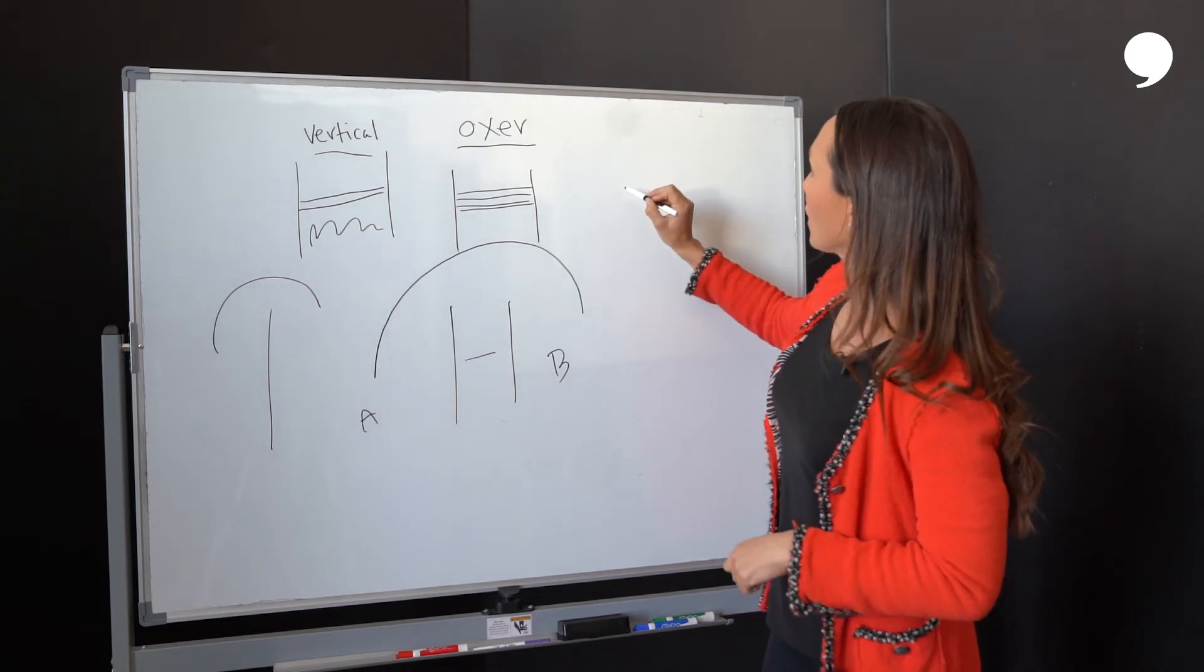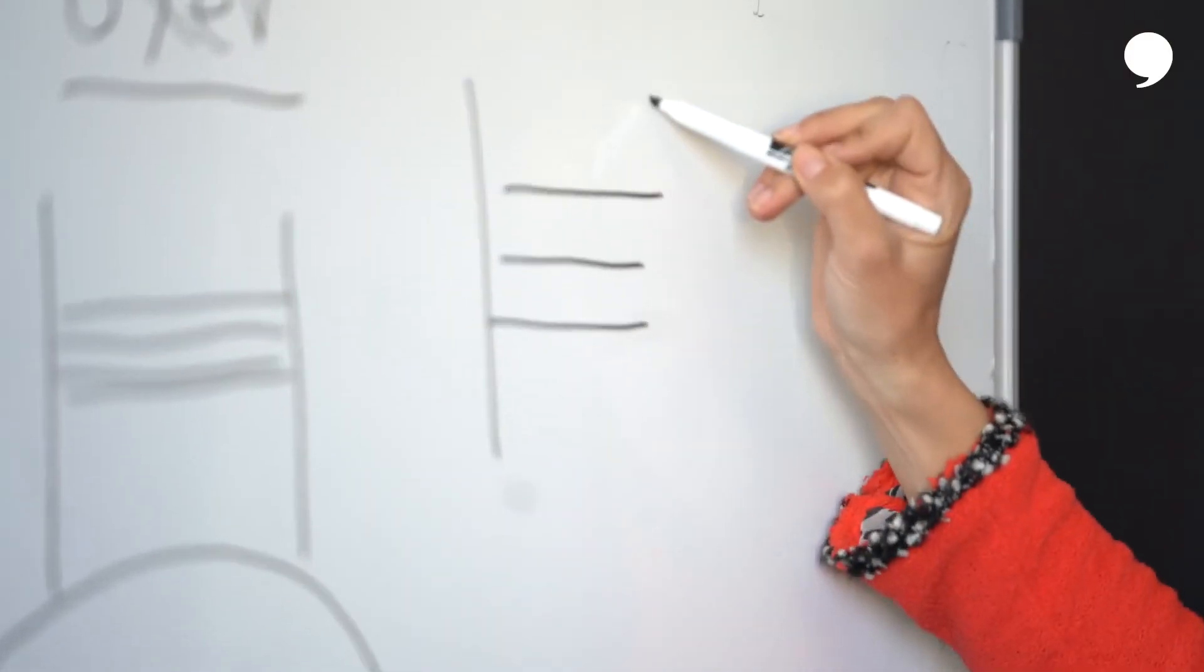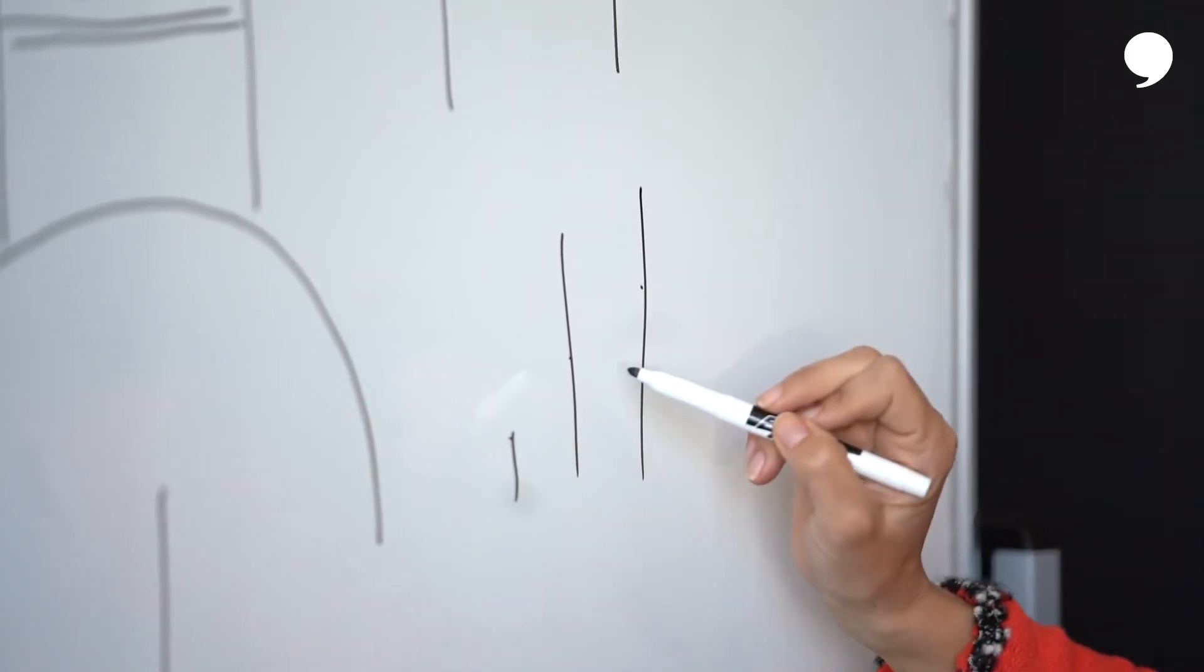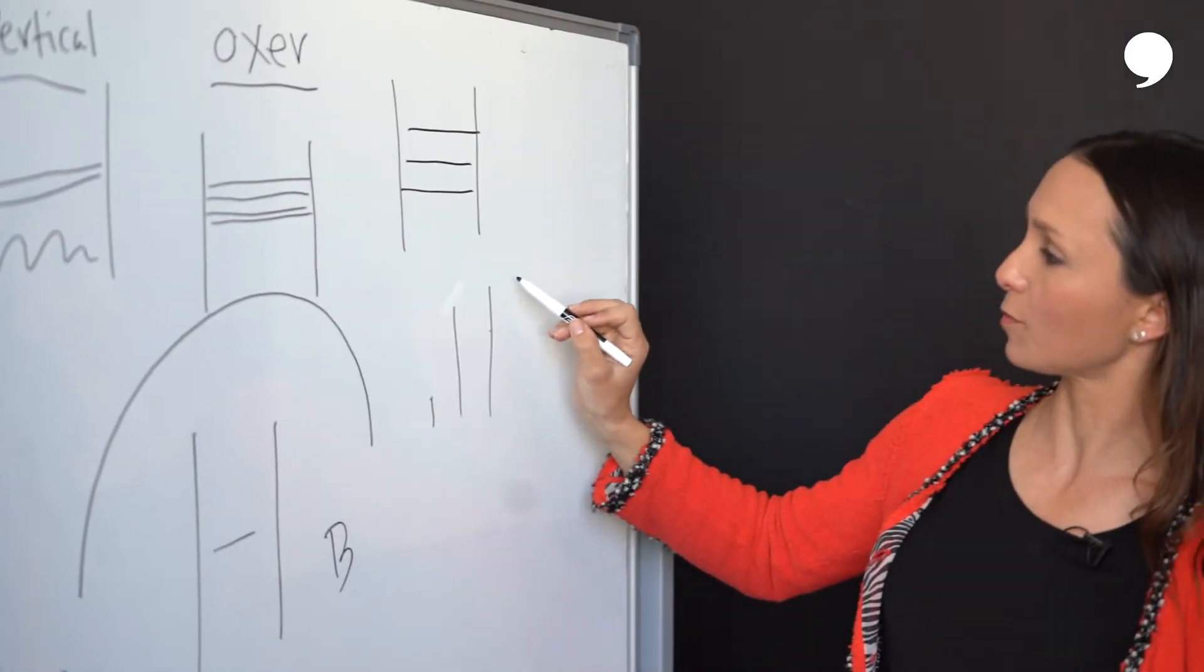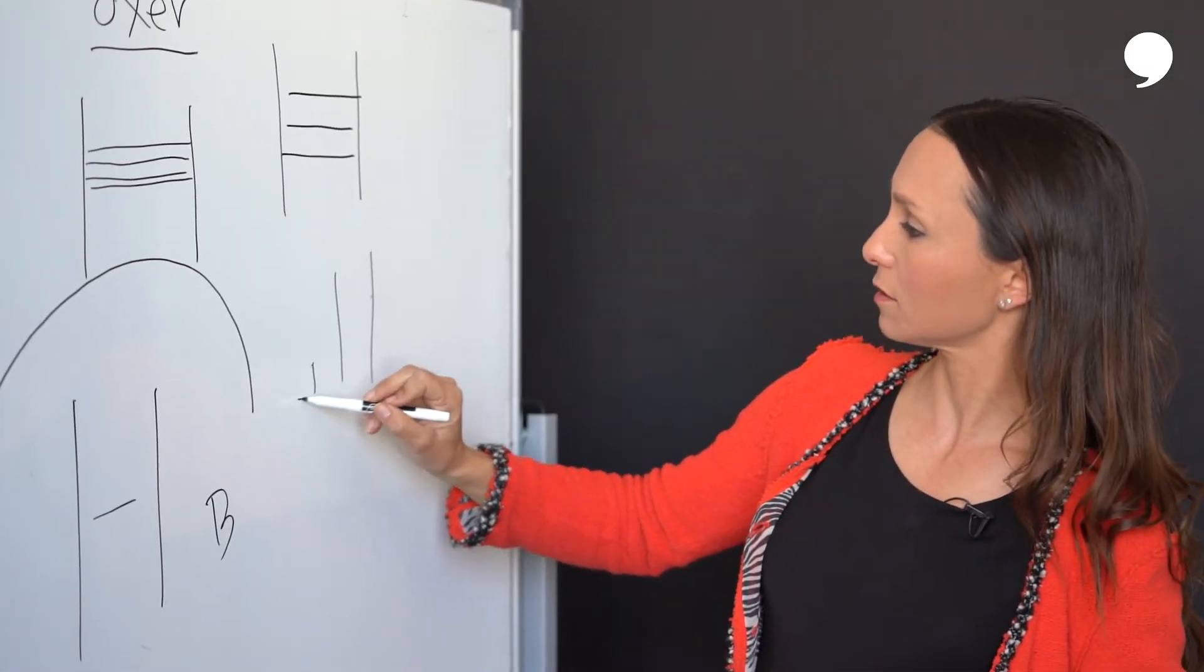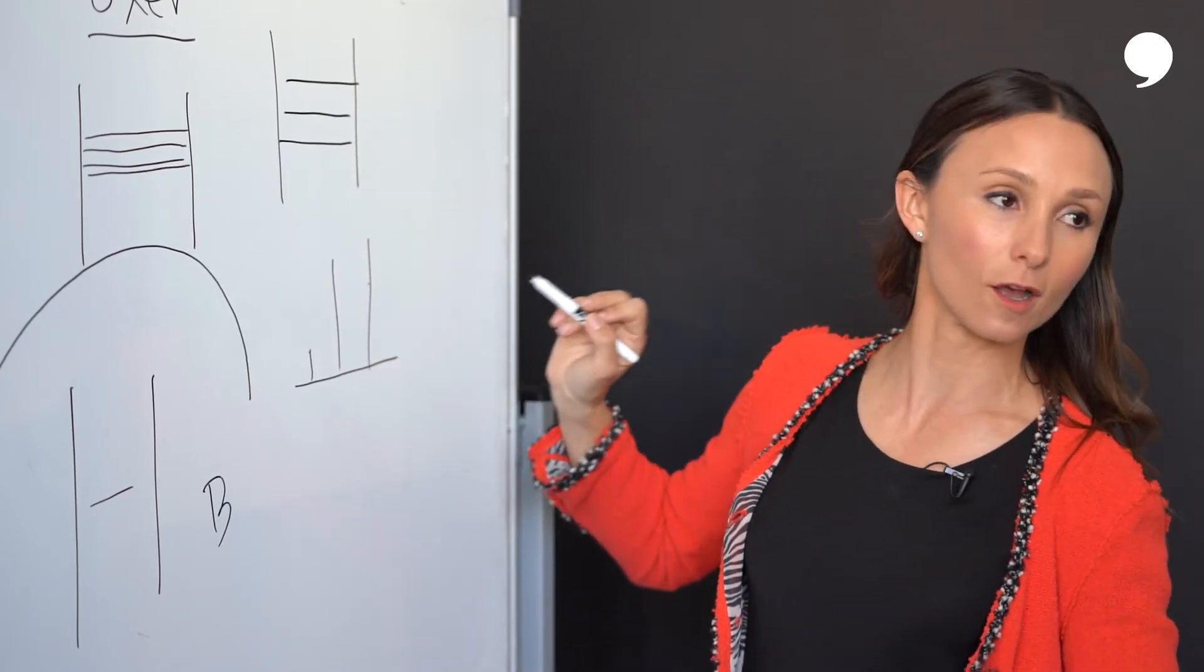You also have what we call a triple bar. You can knock this part down or this part down, but you can't knock this part down. It's basically just lowering the obstacle height.